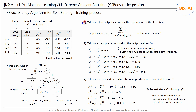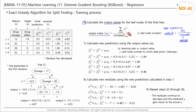Step 6 calculates the output values for each leaf node in the final tree. The output value is calculated using a formula where, for GBM regression, the output was the average of the residuals, but in XGBoost, lambda is added to the denominator as a regularization constant. Here, J is the leaf node number and I is the data point number belonging to that leaf node. In the paper, the output value is denoted as W.